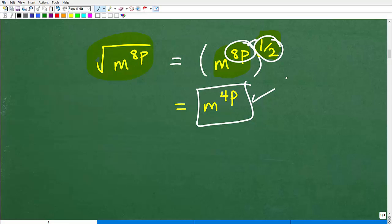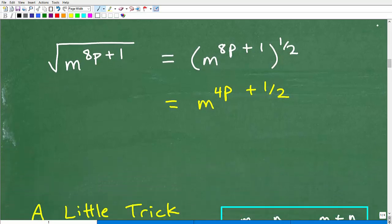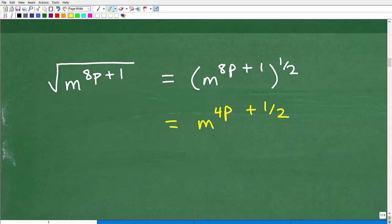All right, so we're getting closer to the actual problem. I'll show you this little trick here in a second. We have m to the 8p plus 1, so we're going to write this as m to the 8p plus 1 to the one-half. We're going to distribute this power here: one-half to 8p, so that's 4p, and then one-half to 1 is one-half. So we have m to the 4p plus one-half. Right here, this is still kind of confusing for a lot of students.